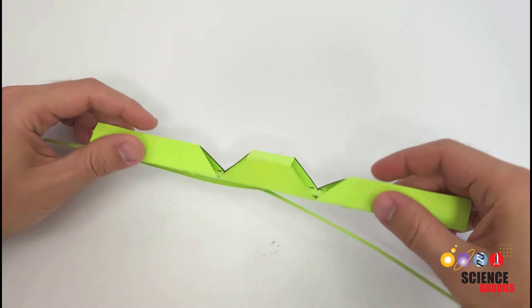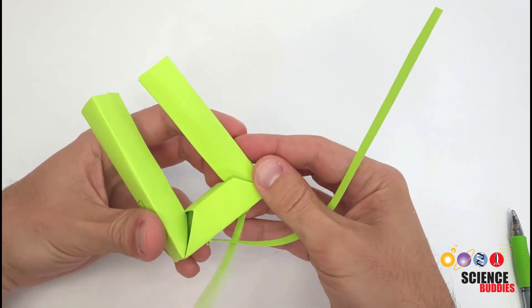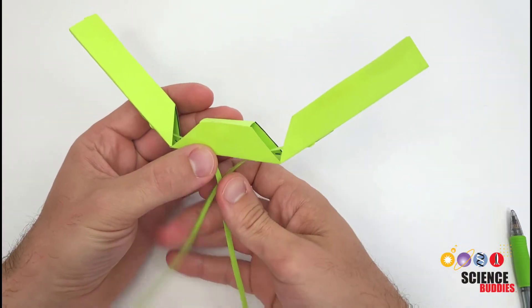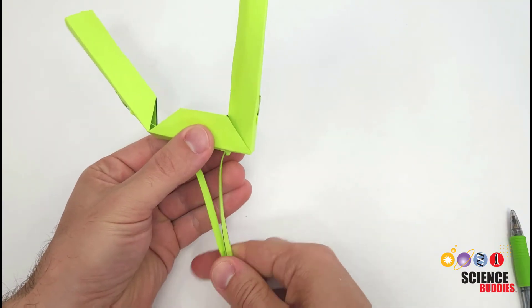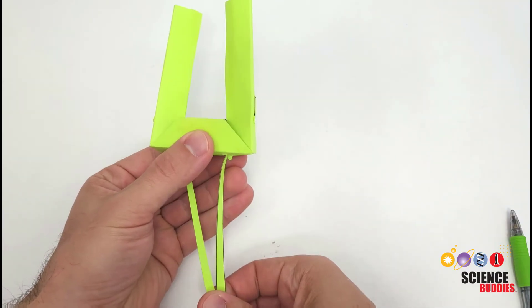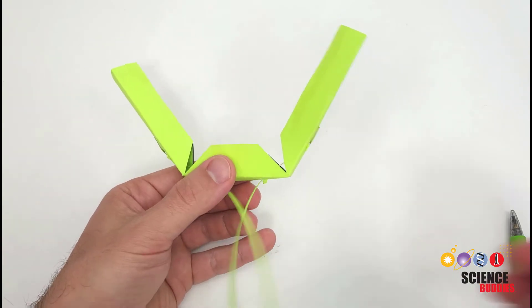Once the glue on the tendons is dry, you are ready to test your gripper. Fold the fingers up 90 degrees, but don't glue them in place. You just want to crease the fold line. Then, if you hold the gripper at the center and pull on the tendons, you can make the fingers close. When you release tension on the tendons, the fingers should open again.